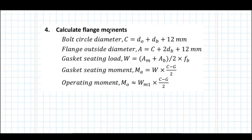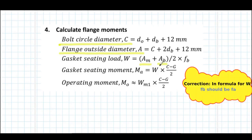Next, corresponding to the two load cases, the flange moments are calculated. For this purpose, first the bolt circle diameter C and flange outside diameter A are calculated. The gasket seating load W is calculated based on am — which is the required bolt area — and ab, which is the actual provided bolt area.